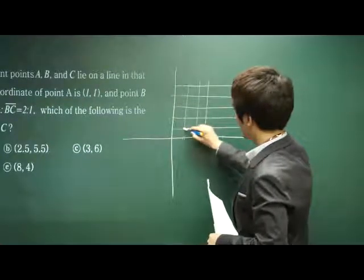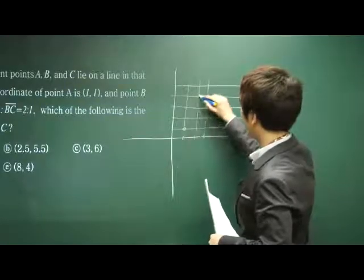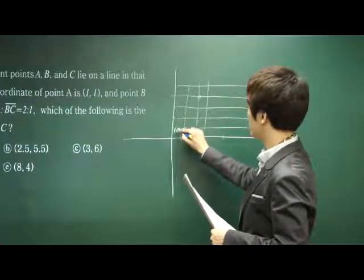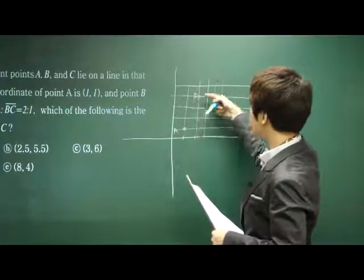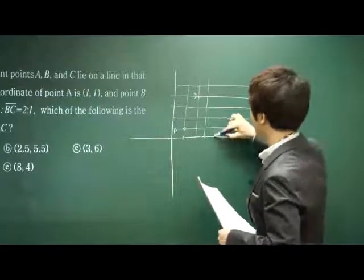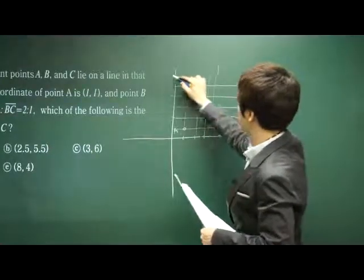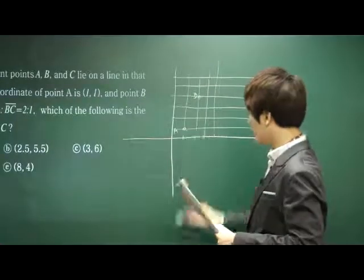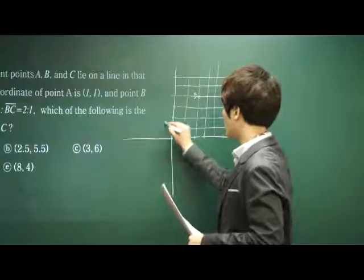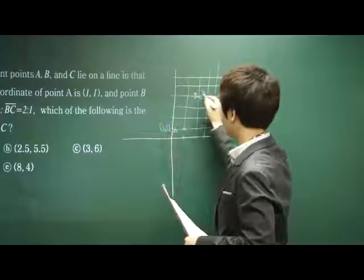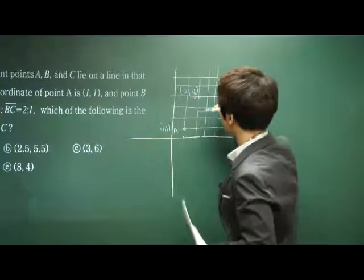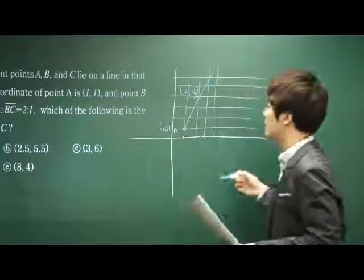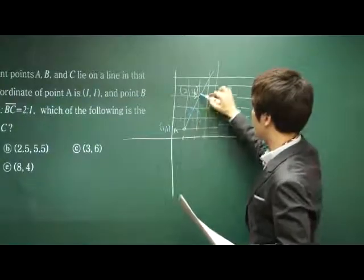Okay, so 1,1 here. 2,4. 1,2,3,4 here. Okay, and the segment AB to the BC, C is somewhere up here, right? It's 2 to 1. Okay, 2 to 1. We're given point A is (1,1), and B is (2,4). And C lies somewhere up here, but the ratio is 2 to 1.